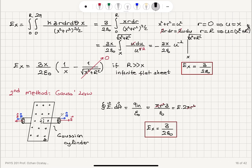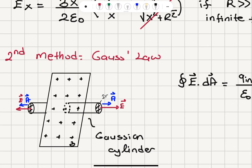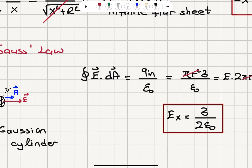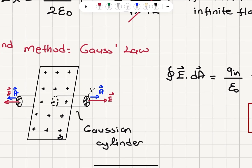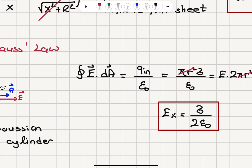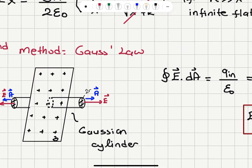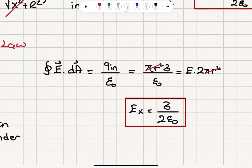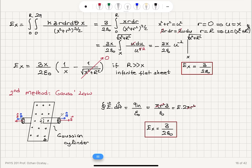Using Gauss's law: the closed surface integral E·dA equals q_in over ε₀. The charge enclosed is surface charge density multiplied by πr² for the cylinder, divided by ε₀, equals E dot product with the area vector, giving 2EA = 2Eπr². This gives us an electric field of σ over 2ε₀.